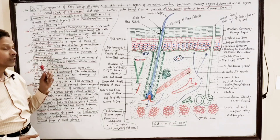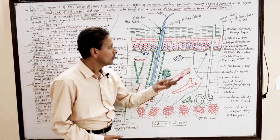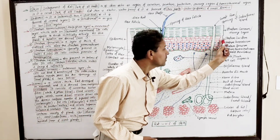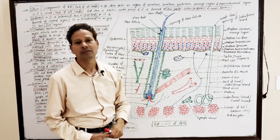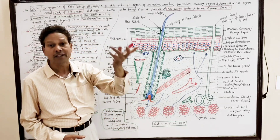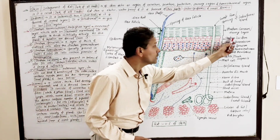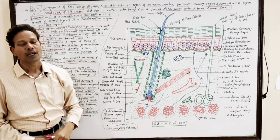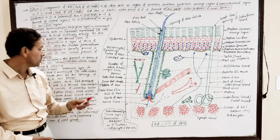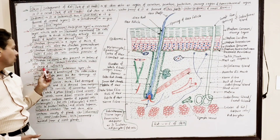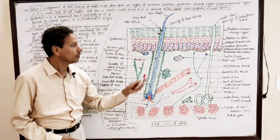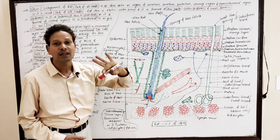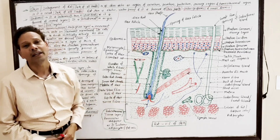The next layer, just above the stratum granulosum, is the stratum lucidum — the fourth layer. The cells are clear and contain a shining pigment called eleidin, which makes stratum lucidum a refractile and shiny layer.